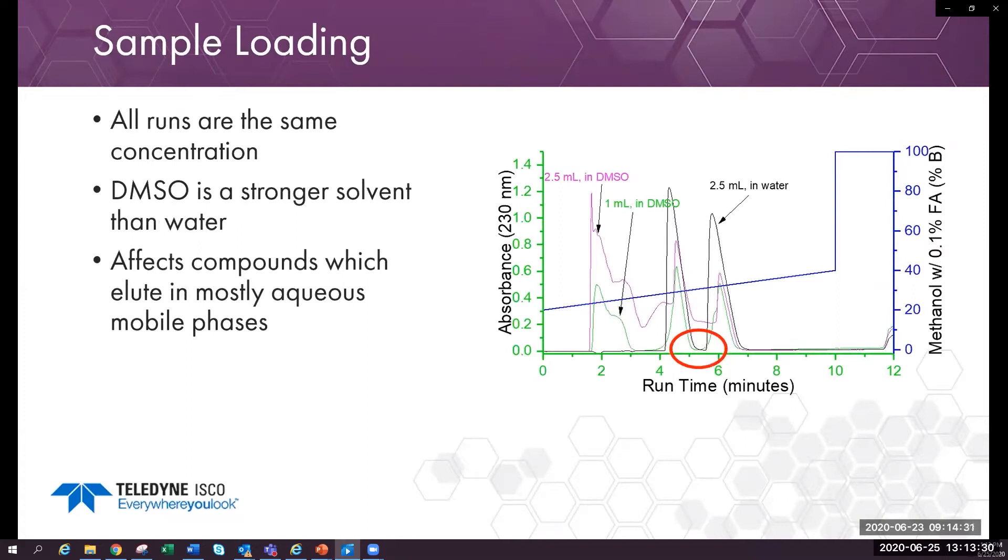An efficient preparative purification has the peaks barely touching. Now let's try to increase the loading to 2.5 mils. We see that the peaks now run together. And the first peak runs into the DMSO solvent front. The purity and efficiency of this purification suffered badly.